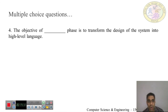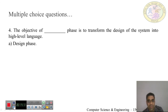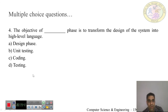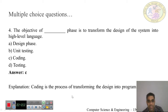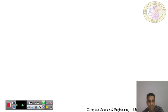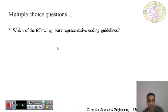Question 4: The basic objective of the dash phase is to transform the design of the system into a high-level language. The options are design phase, unit testing, coding and testing. The answer is coding phase — the objective of the coding phase is to transform the design of the system into a high-level language, which is the definition of coding.